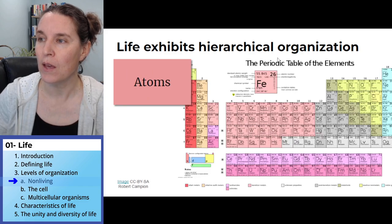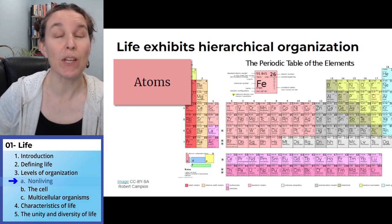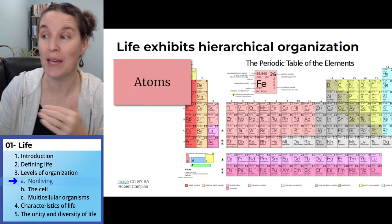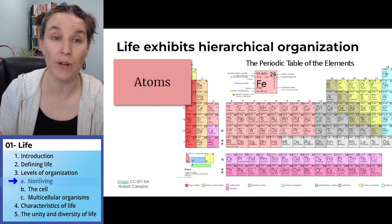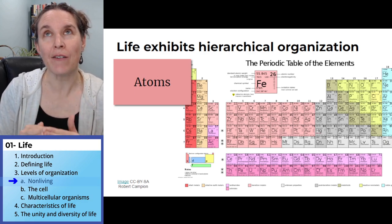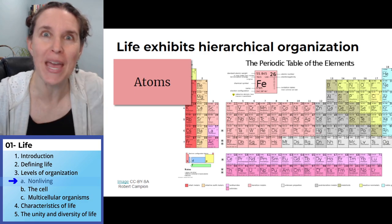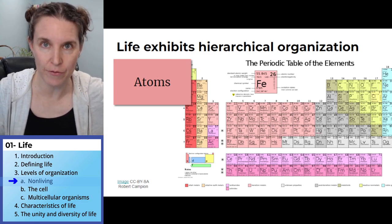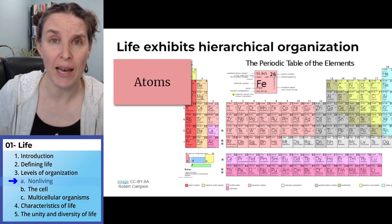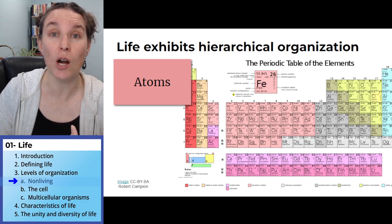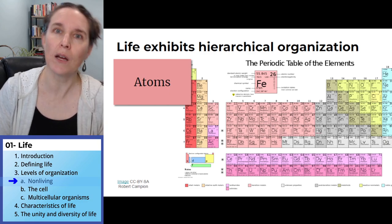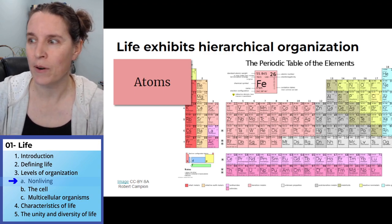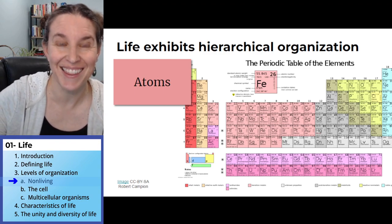Atoms are the next level of organization, and atoms can be organized in a periodic chart. Atoms have flavors based on the number of subatomic particles they have. Examples of atoms: oxygen, carbon, sodium, chloride, iron. This periodic table lists all the known elements that have been discovered through scientific processes.